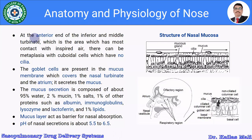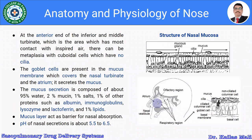At the anterior end of the inferior and middle turbinate, the area with the most contact with inspired air, there can be metaplasia with cuboidal cells that have no cilia. Here is the respiratory region, the olfactory region, the atrium, and squamous epithelium. This is the structure of the nasal mucosa.